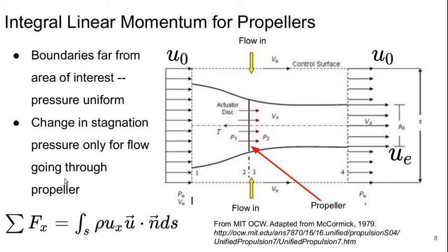So then from integral momentum, we get that the net force in the x direction, which of course is the thrust, is the integral over the surface of the control volume of rho ux times the dot product of u dot n, where n is the outward facing normal over the surface.